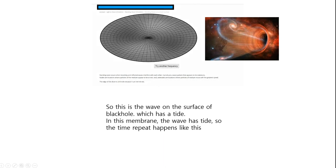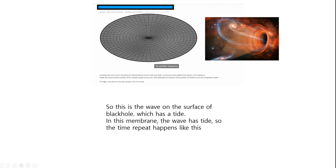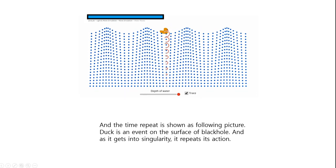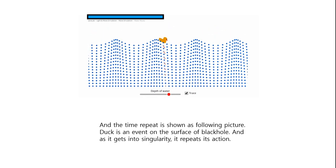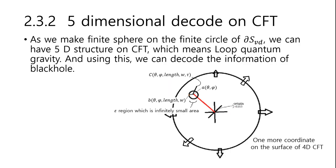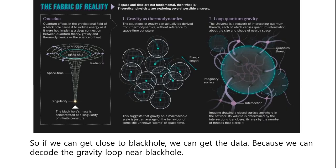This is the wave on the surface of the black hole which has a tide. In this membrane, the wave has a tide, so the time repeat happens like this. The time repeat is shown in the following picture. It is an event on the surface of the black hole, and as it gets into the singularity, it repeats its action. When combining ADS and CFT, we have this picture. Black hole is a sphere with infinite curvature. As we make a finite sphere on the finite circle of DS3D, we can have a finite structure of CFT, which means loop quantum gravity. Using this, we can decode the information of the black hole, so if you can get close to a black hole, you can get the data because we can decode the gravity loop near the black hole.